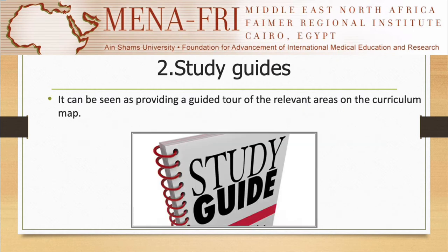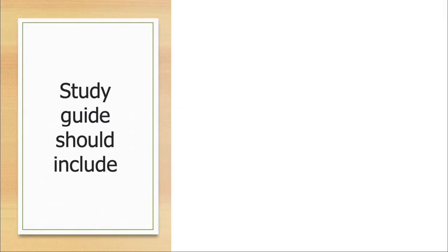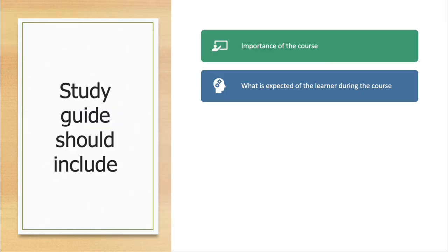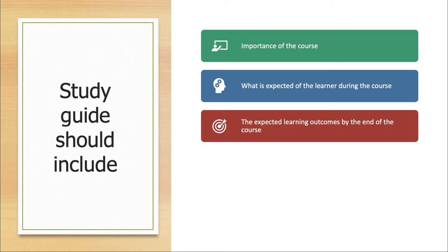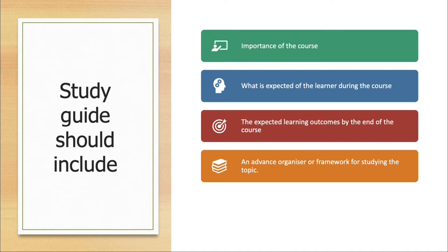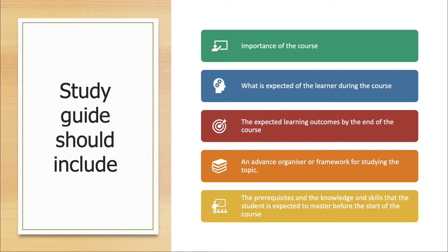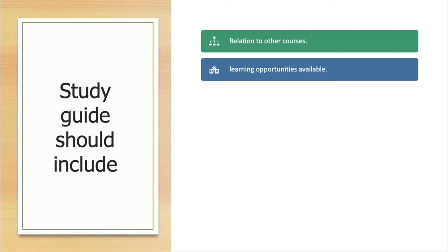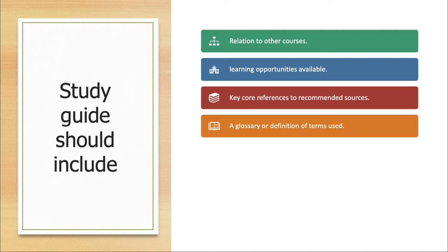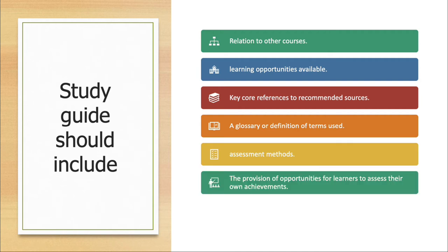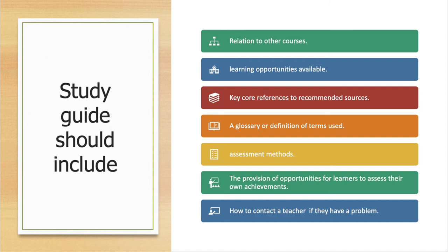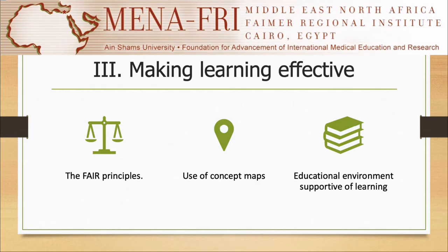The second tool is the use of study guides, which can be seen as providing a guided tour of the relevant areas of the curriculum map. The study guide pulls together all the learner should know about a course, what is expected of them, and the learning opportunities available. A study guide should include: the importance of the course, what is expected of the learner, the expected learning outcomes, an advanced organizer or framework for studying the topic, and the prerequisite knowledge and skills the student should master before the course. It should also include relations to other courses, learning opportunities available, key references, a glossary of terms, assessment methods, opportunities for learners to assess their own achievements, and how to contact a teacher if they have a problem.